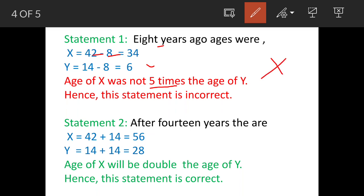Statement 2, after 14 years, let's see the ages. X will be 56 years and Y will be 14 plus 14 equals 28 years. Because these are the ages we have worked out. So we have added number of years here and here we see that age of X is actually twice the age of Y. So this statement is correct.